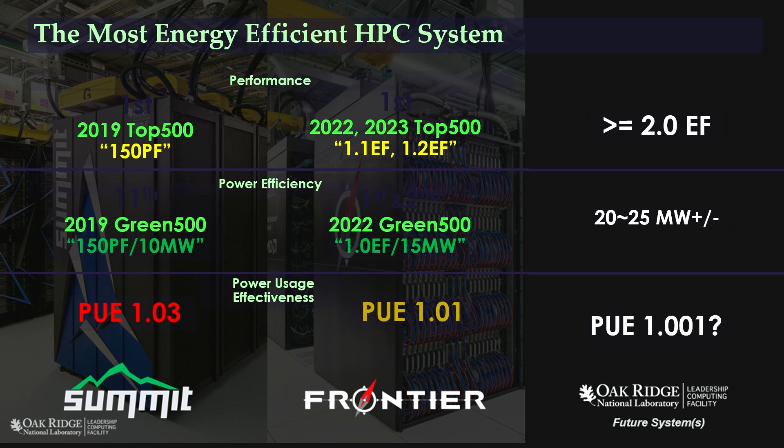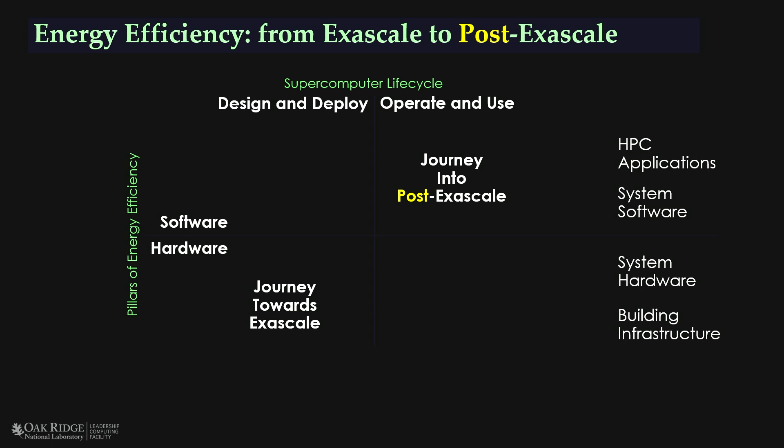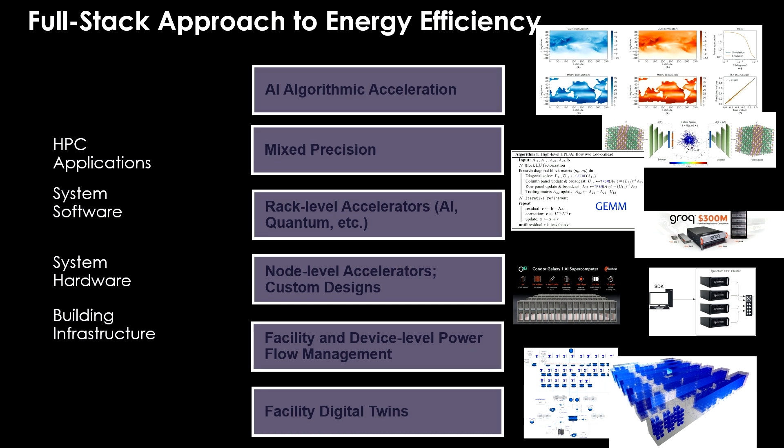Comparing Summit and Frontier: Summit had 150 petaflops per 10 megawatts, while Frontier achieves one exaflop for roughly the same power demand. For the next system, they're hoping to achieve a PUE (power usage efficiency) approaching 1 — meaning the energy you provide is essentially all useful energy in the system. Their journey towards exascale was mostly a hardware journey, but they think going forward the journey will be more on the software and application side — for example, mixed precision and other methods to minimize the energy footprint of simulations.